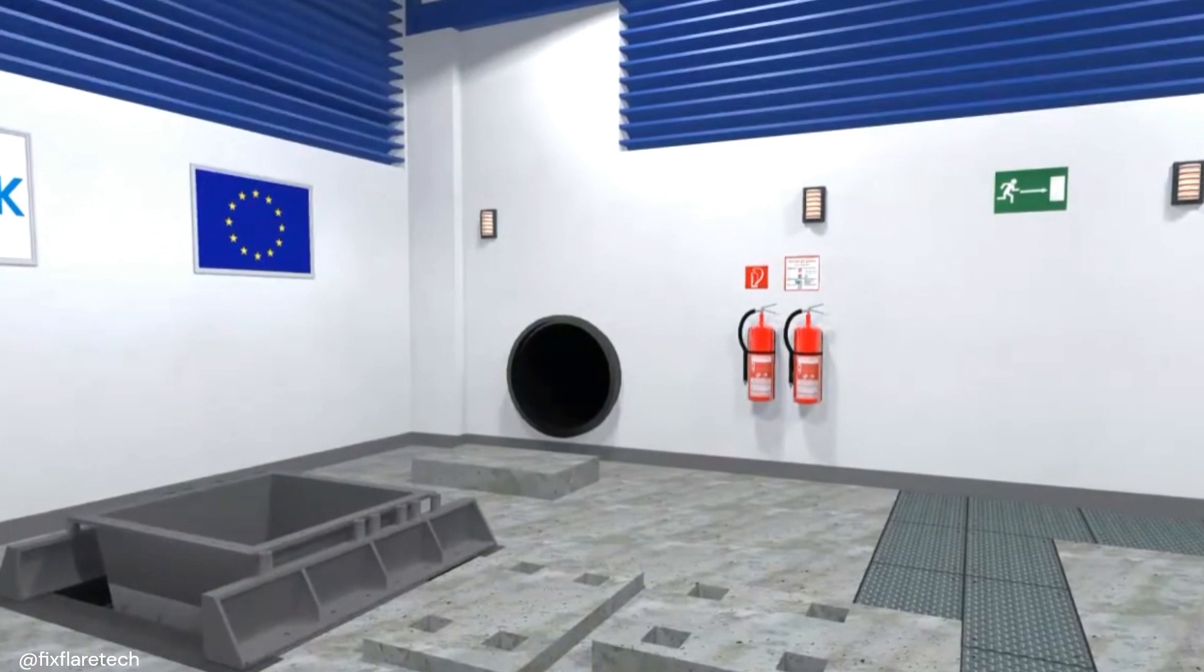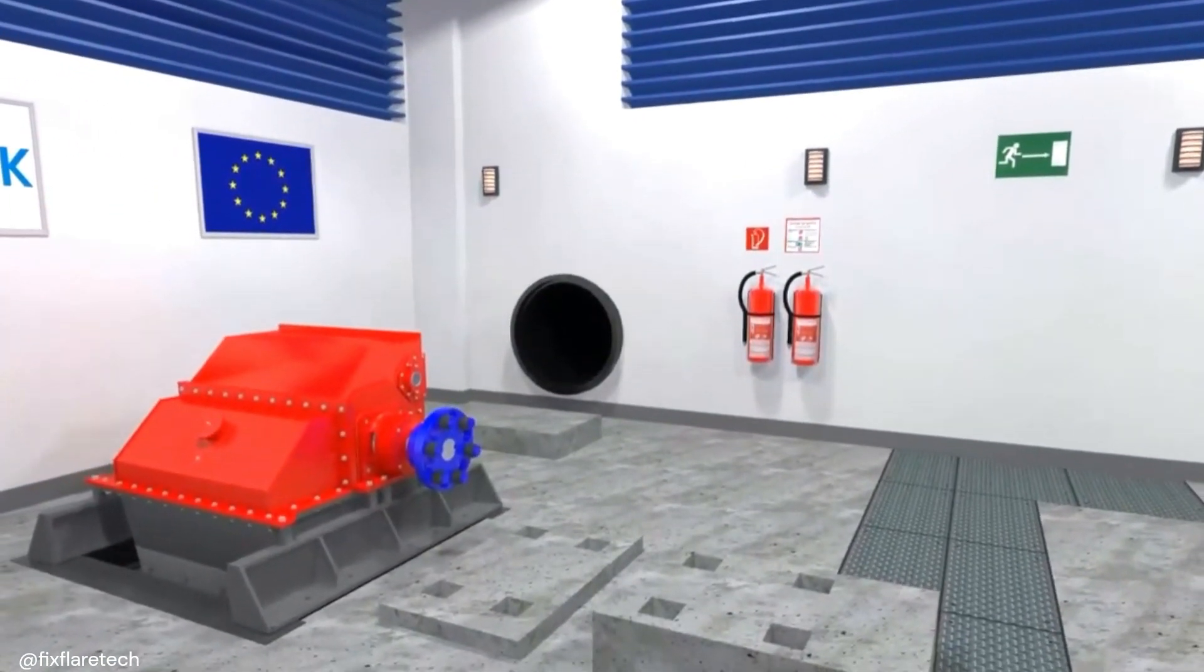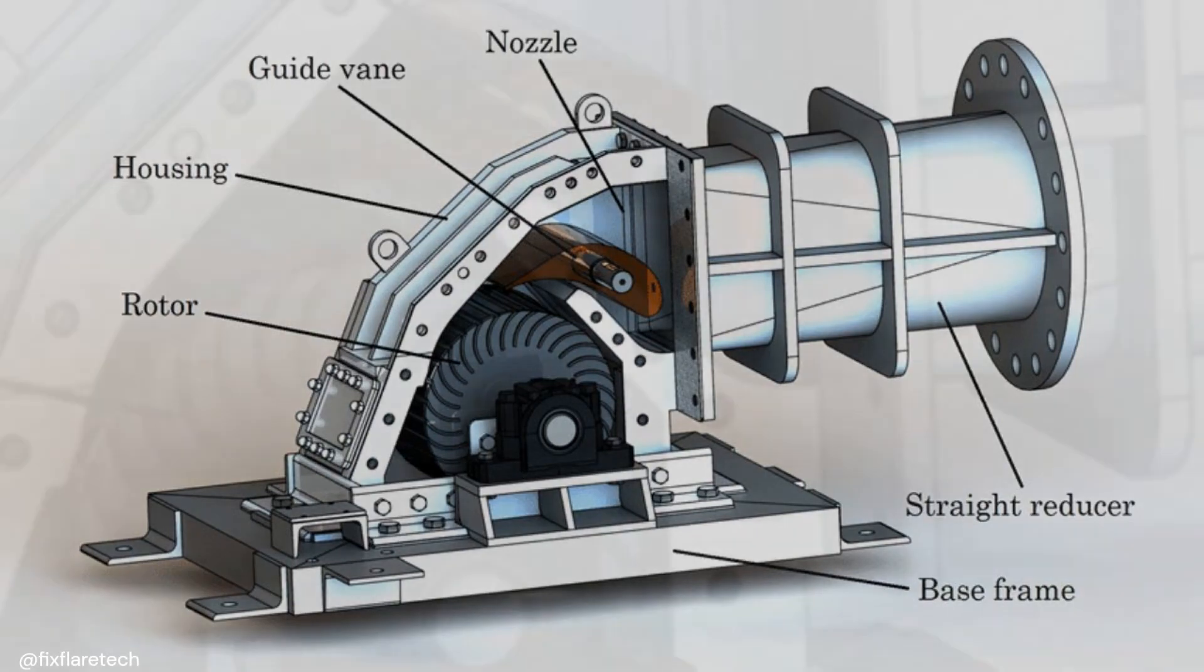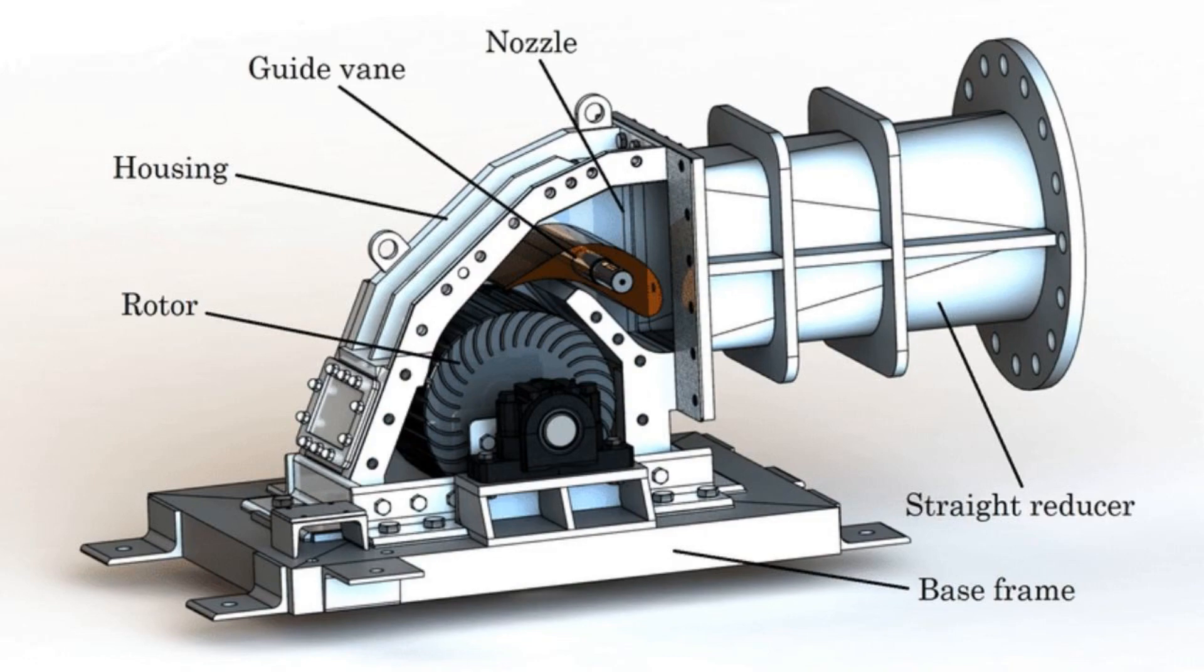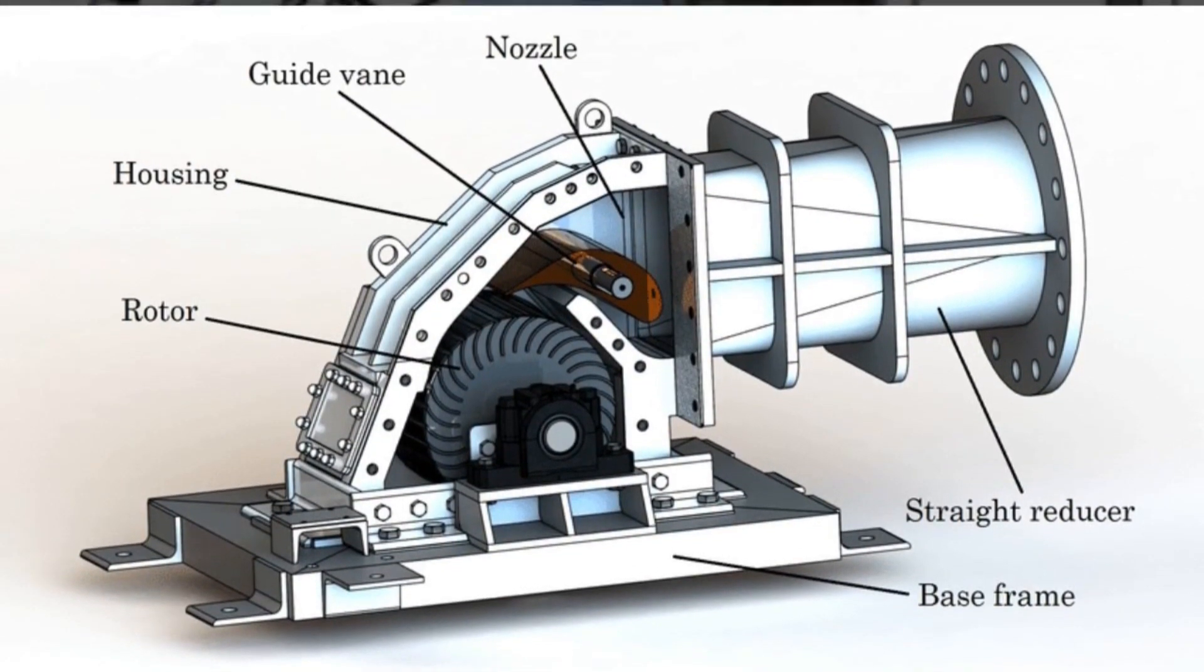Once the water passes through the runner, it exits the turbine through a draft tube. This diverging conduit slows down the water flow, converting the remaining kinetic energy into pressure energy. This process enhances the overall efficiency of the turbine by reducing energy losses due to turbulence and recirculation.